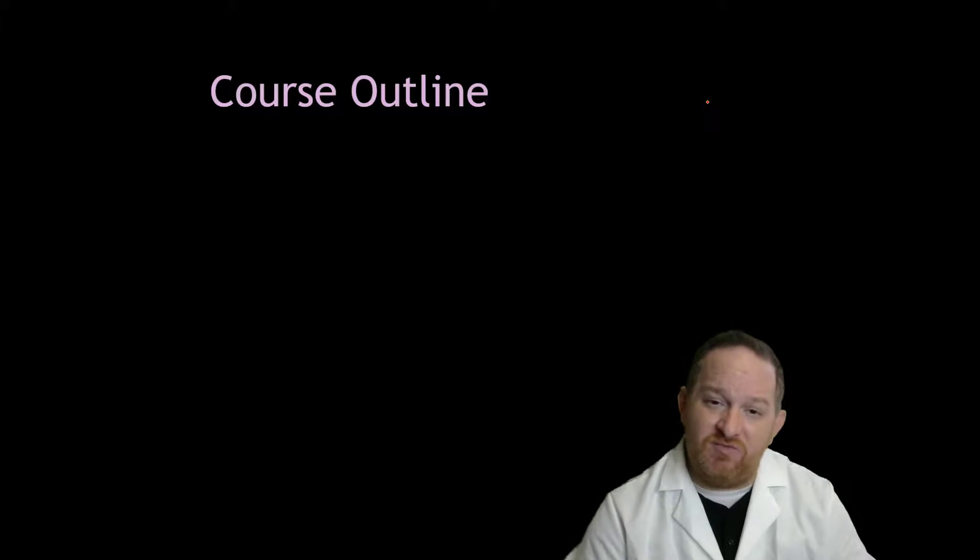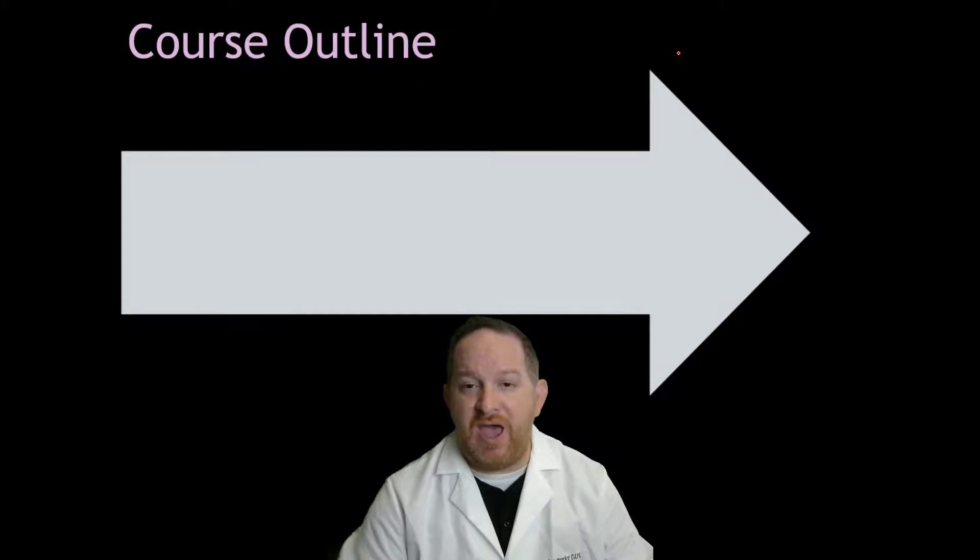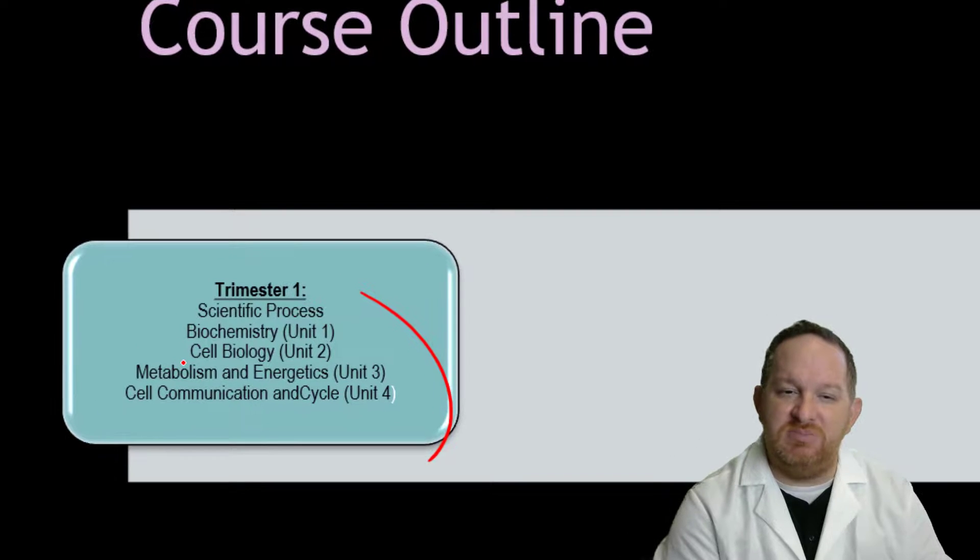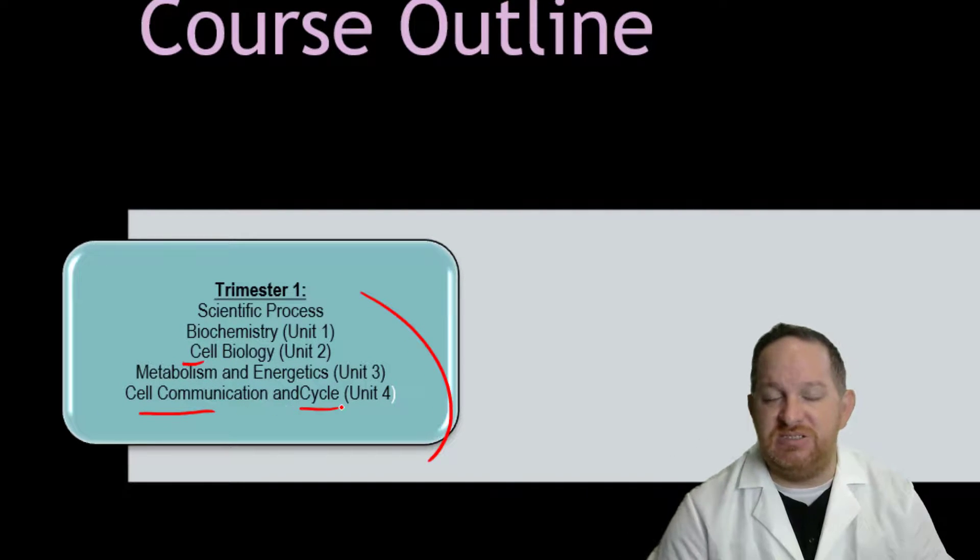The outline of the course is pretty simple. We have the three trimester system and in trimester one we do a lot of the small biology. We're looking at biochem, cell biology, metabolism, energetics, cell communication, and the cell cycle.